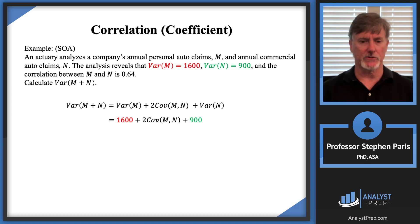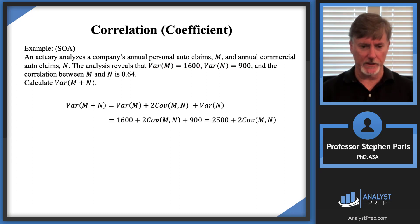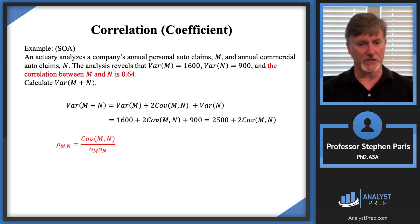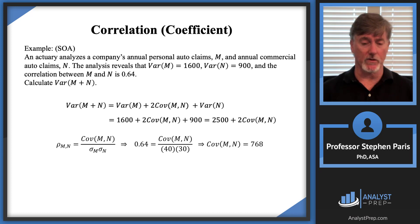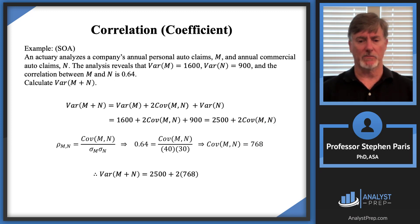I can plug in 1600 and 900 for the variances of cap M and cap N, giving 2500, plus two times the covariance of cap M and cap N. To find the covariance, I use the fact that the correlation equals the covariance divided by the product of the standard deviations. With correlation 0.64, and standard deviations of 40 (square root of 1600) and 30 (square root of 900), solving gives a covariance of 768. Plugging back in: Var(M+N) = 2500 + 2(768) = 4036. That does it for this video.